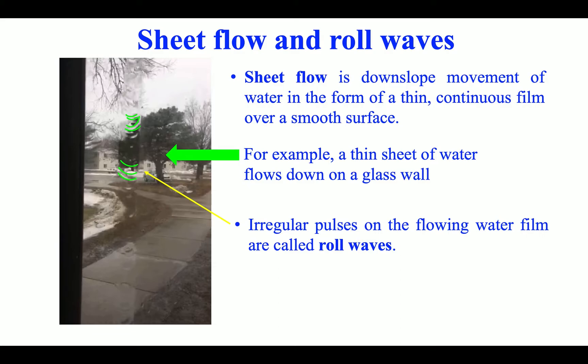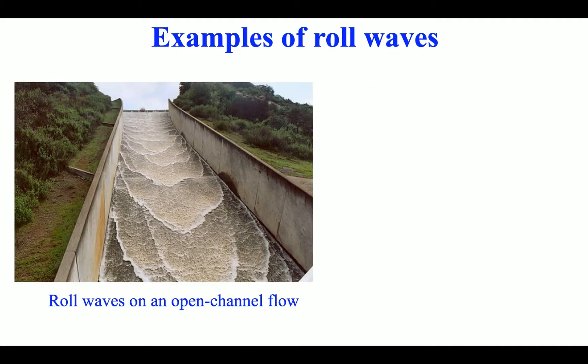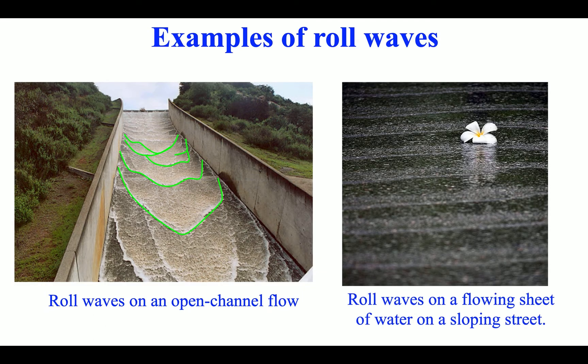Irregular pulses on the flowing water film are called roll waves. Examples of roll waves: roll waves on an open channel flow, roll waves on a flowing sheet of water on a sloping street.